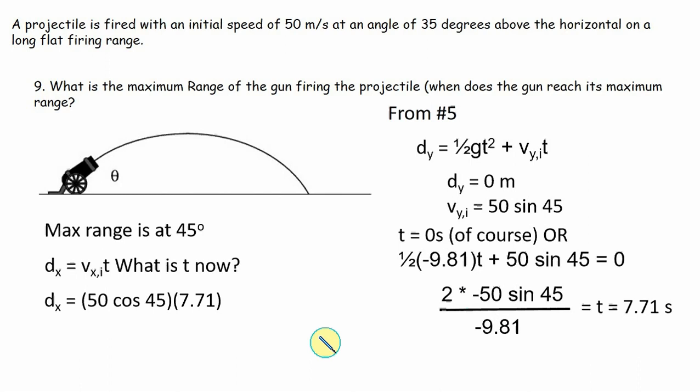So we get 7.71 seconds to go the whole way. So now I know what the time is. So now I can come over here to my DX equation. I know that the speed in the X direction, the initial speed is the hypotenuse times the cosine of 45. It's not the same speed it was in number one because it's not the same angle in number one times 7.71 seconds that it's going to be in the air. So 50 cosine 45 times 7.71. The maximum distance I can launch that projectile is about 273 meters or so. 272.59 is what I calculated.